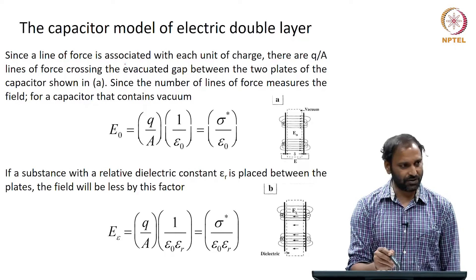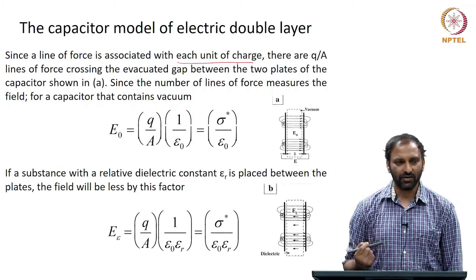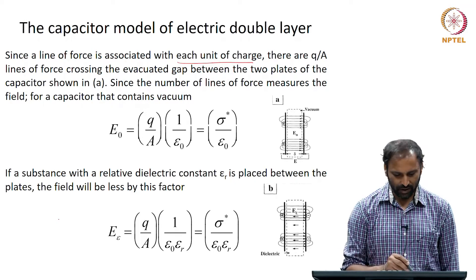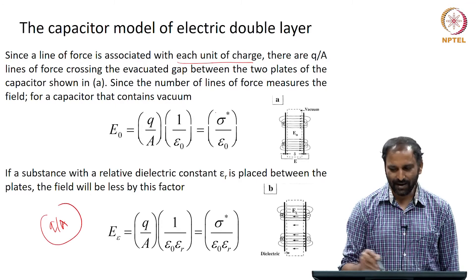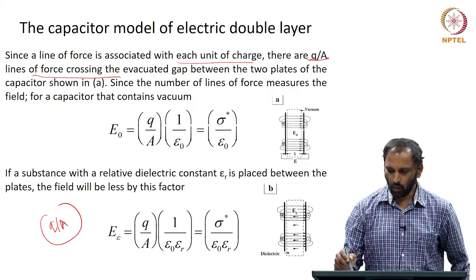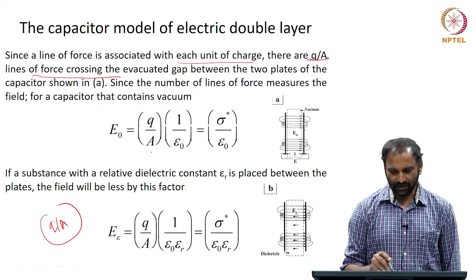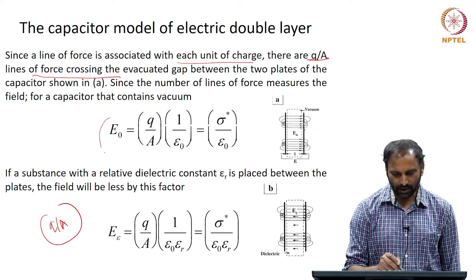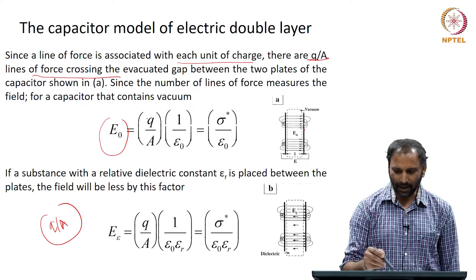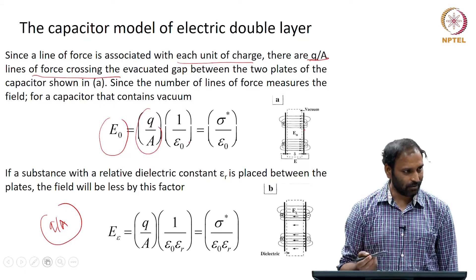Since a line of force is associated with each unit charge, for every charge there is going to be a line of force. Because you have a charge density Q/A, there are Q/A lines of forces that cross from one charged plate to the other. Therefore, the electric field E₀ arising from Q/A lines of forces is Q/A divided by 1/ε, which tells you what is the electric field.